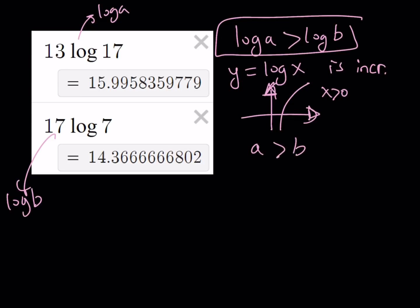But what is a? What is b? Well, a is 17 to the power of 13. Therefore, this is going to be our larger number in this case.